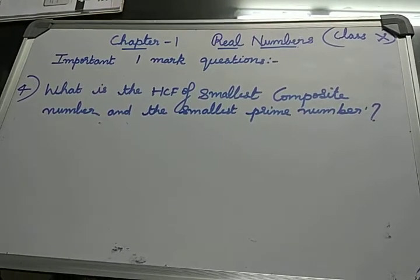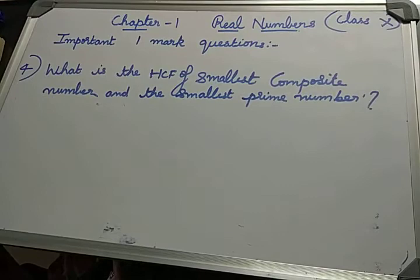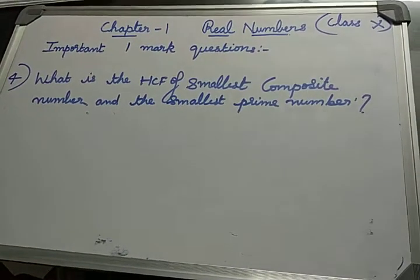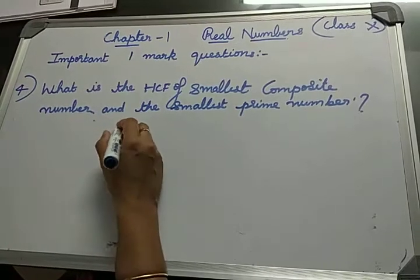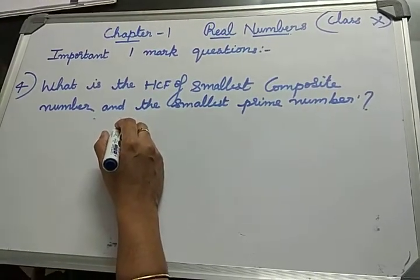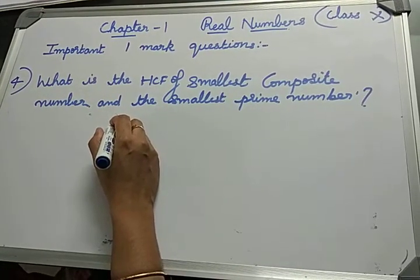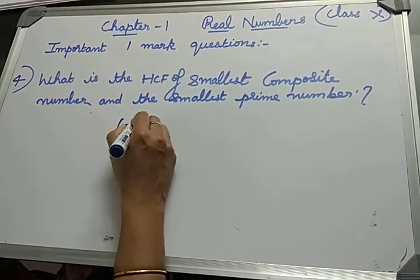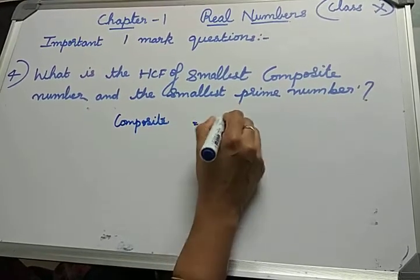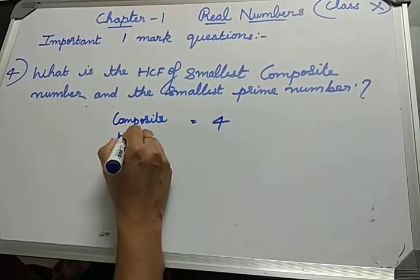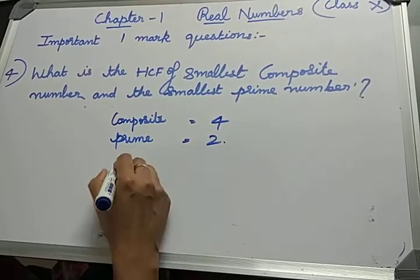Question 4: What is the HCF of smallest composite number and smallest prime number? Which is the smallest composite number? One is neither prime nor composite, so the smallest composite number is 4. The smallest prime number is 2.